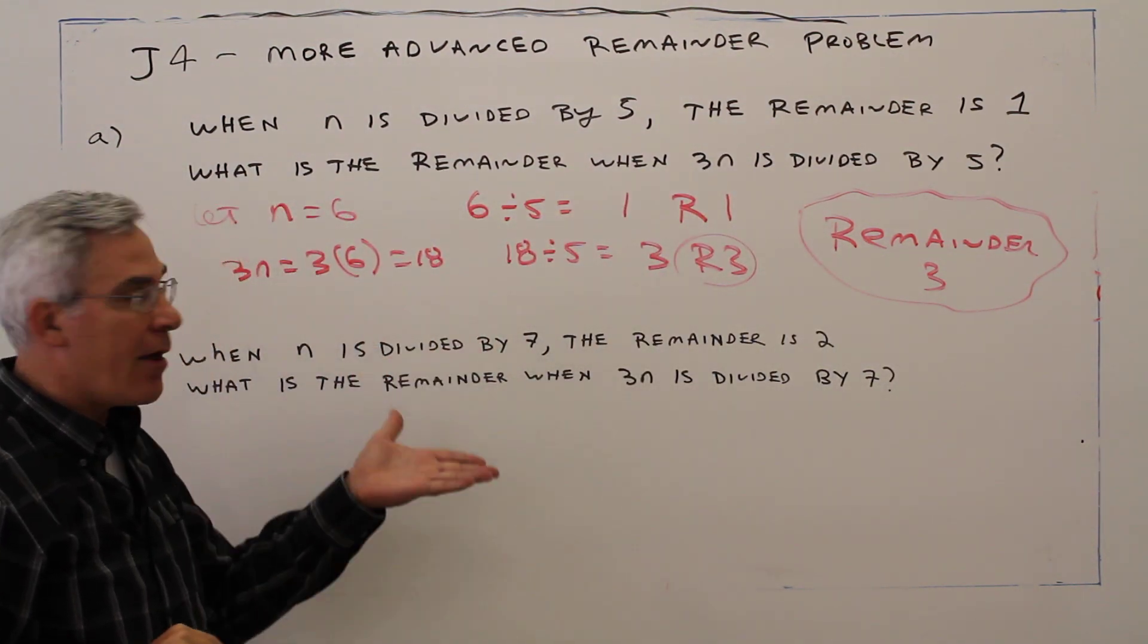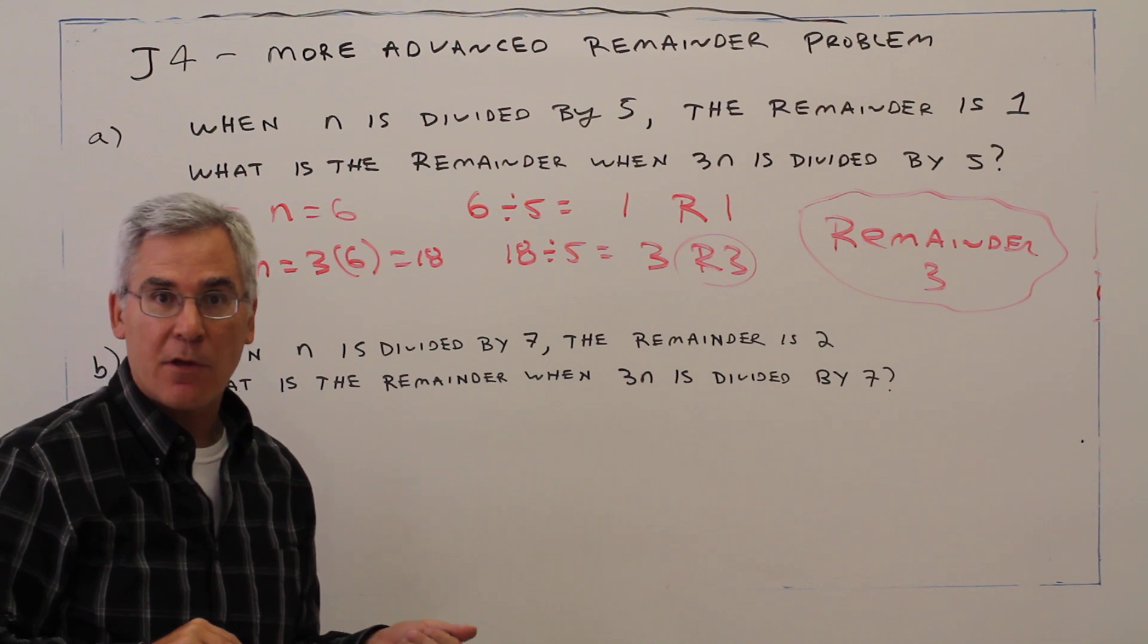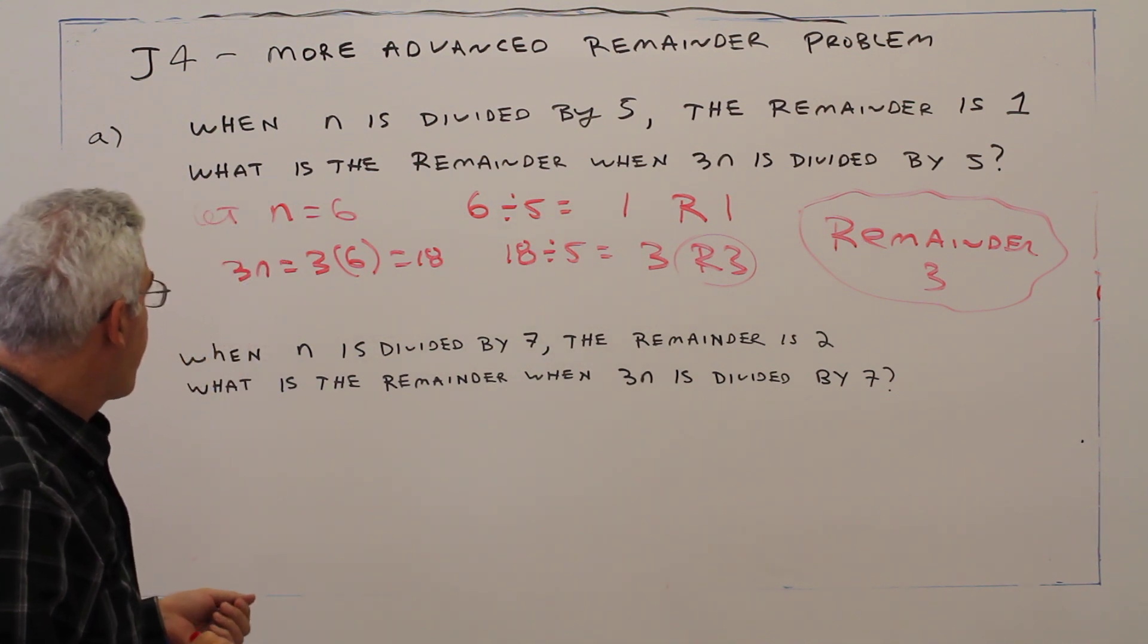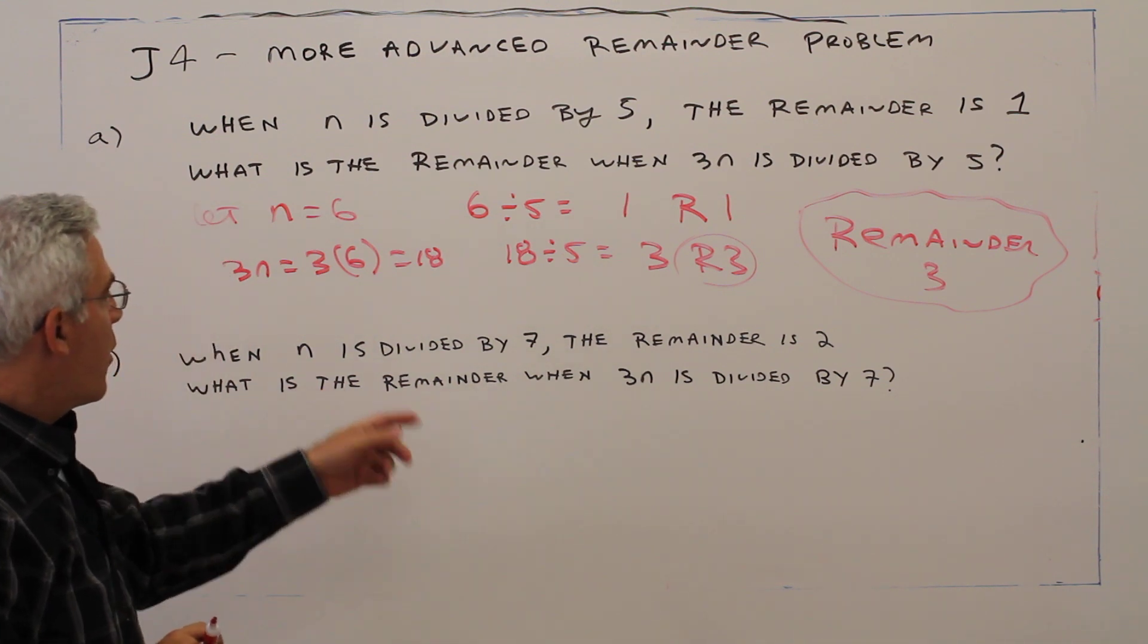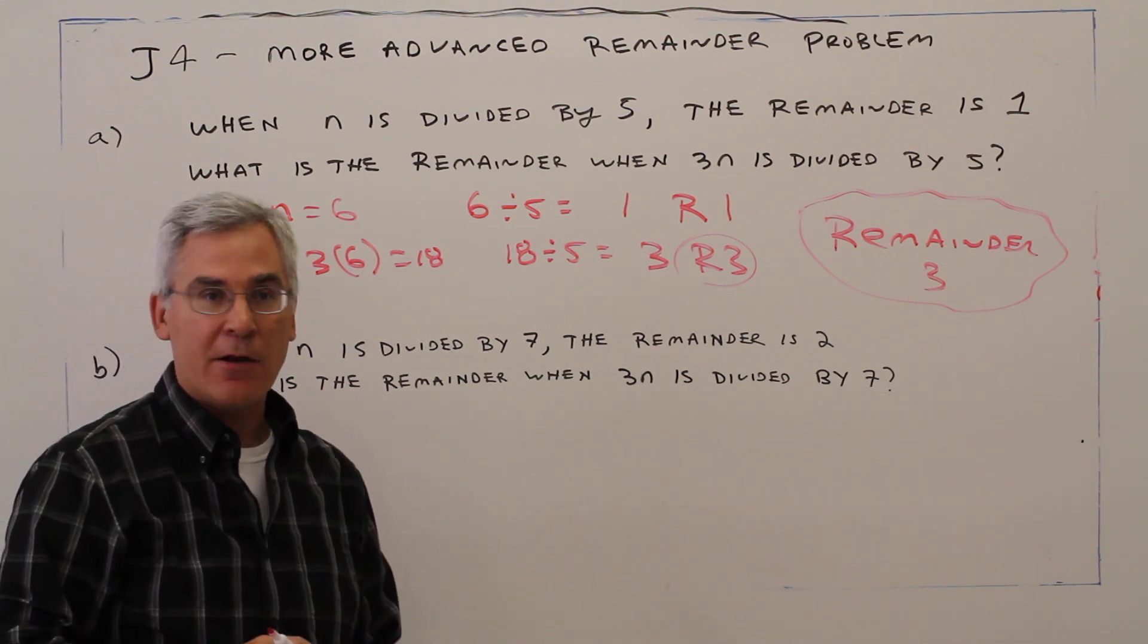Alright, you should try this one on your own and check your results. Pause the video. Part B: When n is divided by 7, the remainder is 2. What is the remainder when 3n is divided by 7?